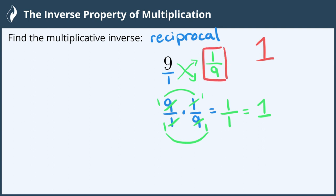So this 1/9 is the multiplicative inverse of the original, or just finding the reciprocal. And we're done!